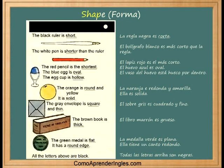The black ruler is short. The white pen is shorter than the ruler. The red pencil is the shortest.